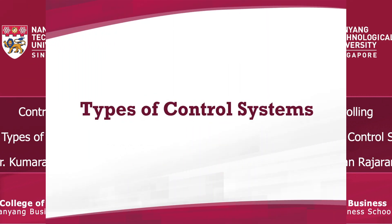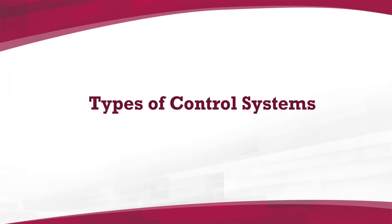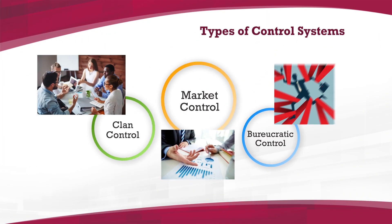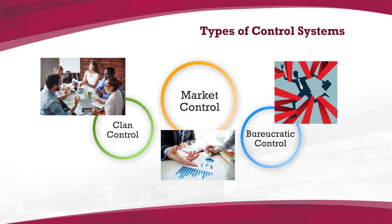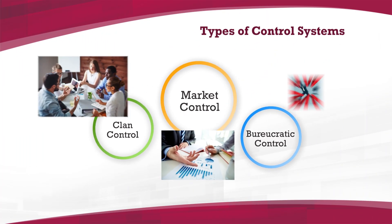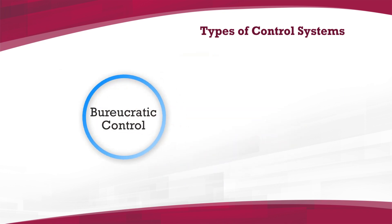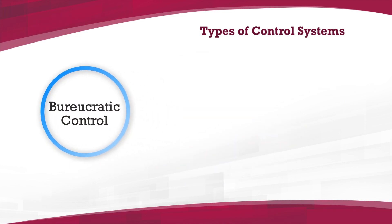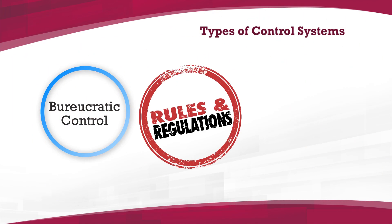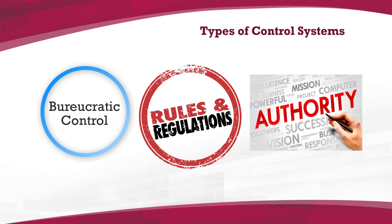There are three main types of control systems. Bureaucratic control is the classic control mechanism where rules and regulations govern behaviour and authority guides employees.